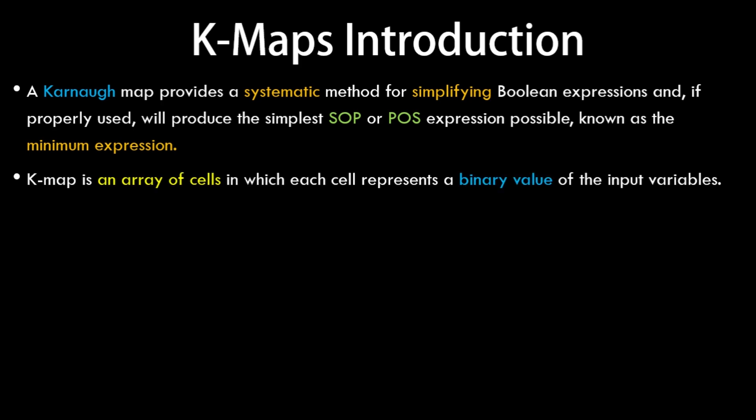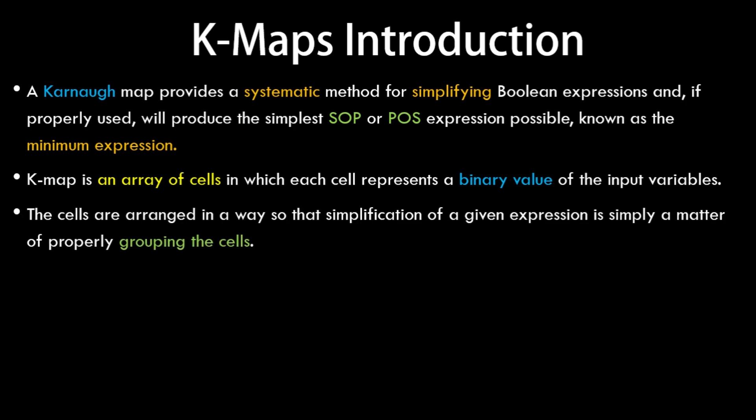K-maps is an array of cells. It's similar to a truth table as it covers all the different types of input values provided by the input variables, but it consists of a 2D array and each cell represents a binary value. These cells are arranged in a specific way so that the simplification of a given Boolean algebraic expression is simply a matter of properly grouping the cells.